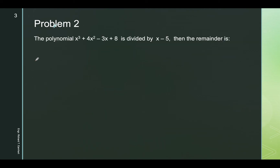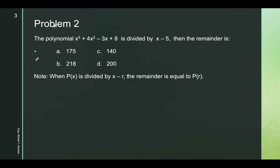The polynomial x cubed plus 4x squared minus 3x plus 8 is divided by x minus 5. Then the remainder would be — note that when the polynomial p(x) is divided by x minus r, the remainder would be equal to p(r).